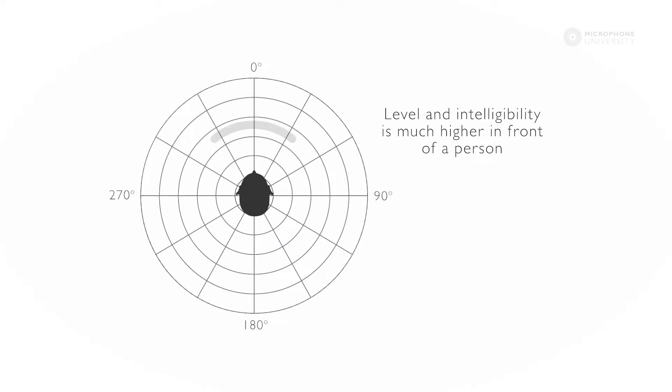The level of the speech is much higher in front of a person, but the intelligibility is also much higher. This is due to the content of the frequencies in front of the person talking as opposed to behind the person.